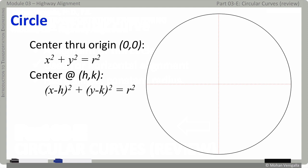But if the origin is at a different point say h, k, the second equation you see on the screen x minus h whole squared plus y minus k whole square equals r square. Again r is the radius and that's the equation that represents circle.